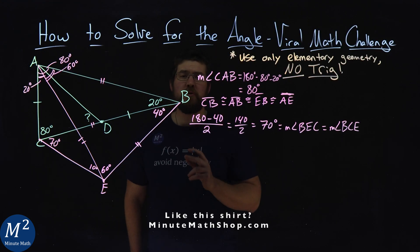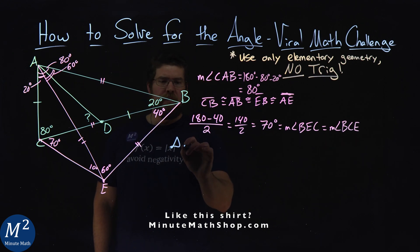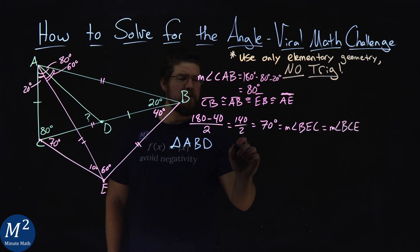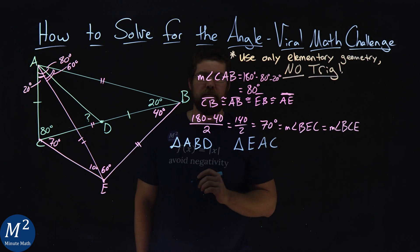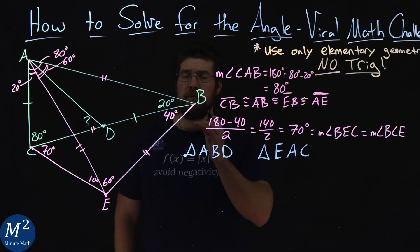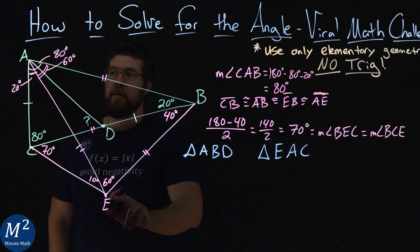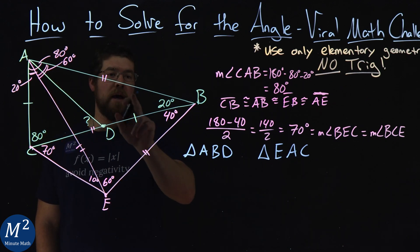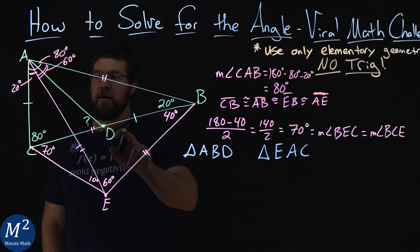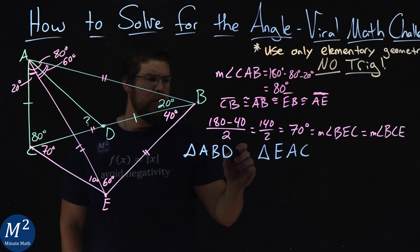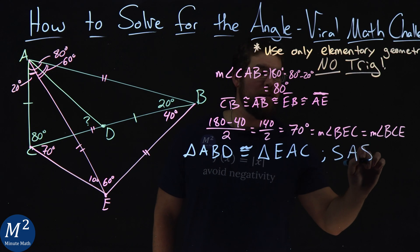I'm now going to focus on two triangles within this picture: triangle ABD and triangle EAC. Line segment AB is congruent to line segment EA. They both have a 20-degree angle. And line segment BD is equal to line segment AC. So these two triangles are congruent by Side-Angle-Side.